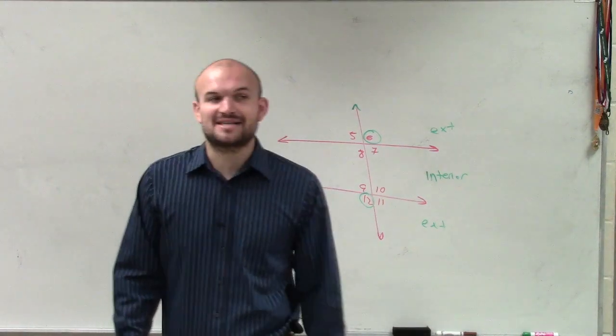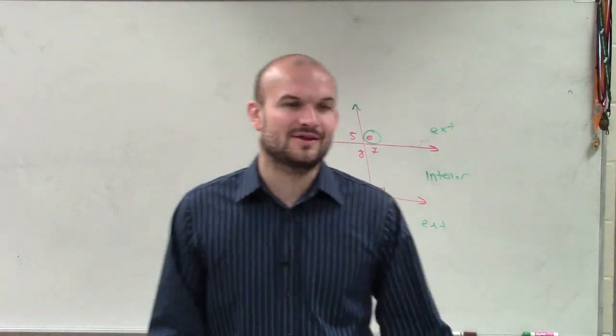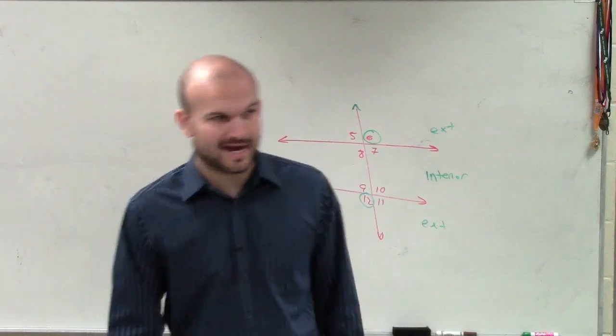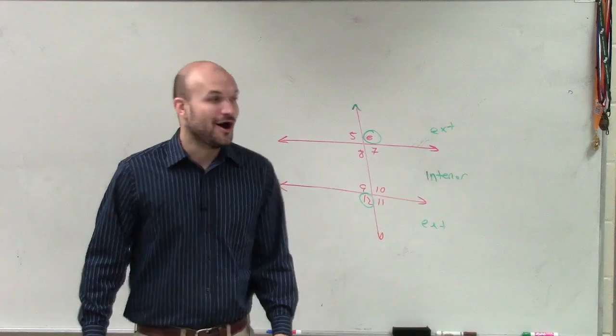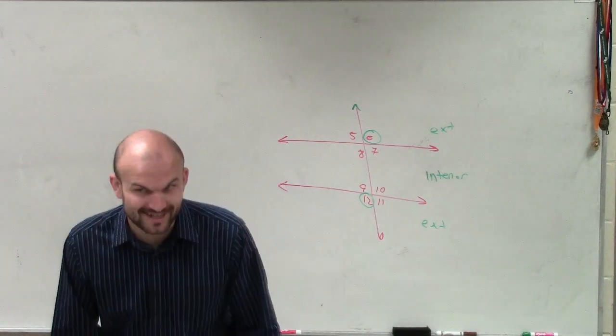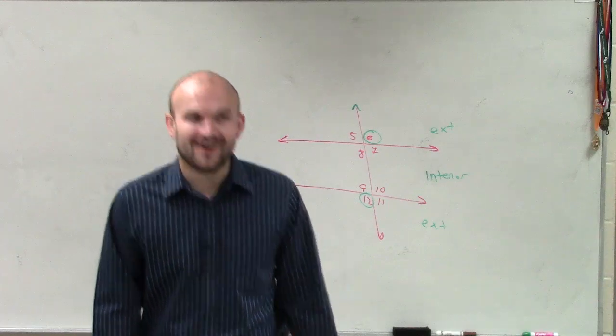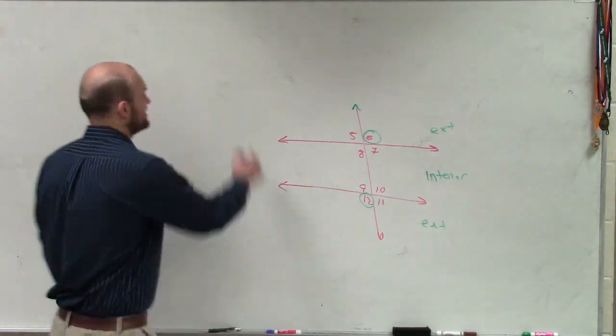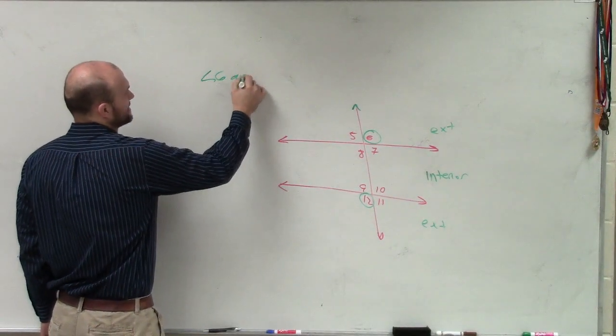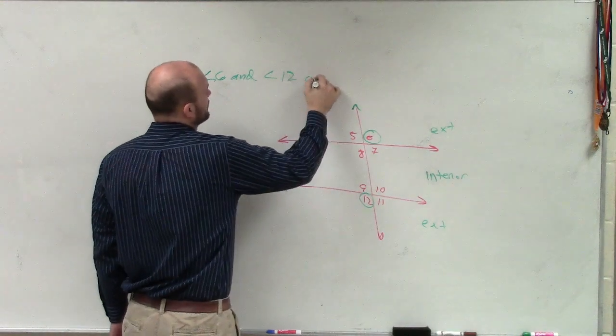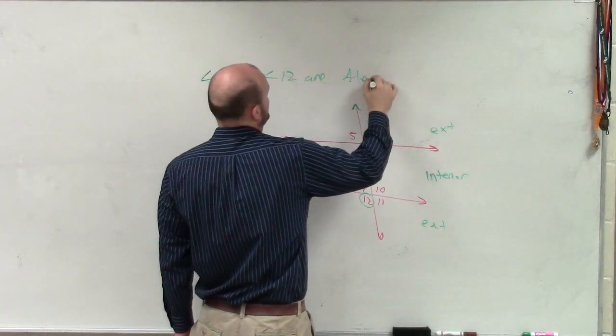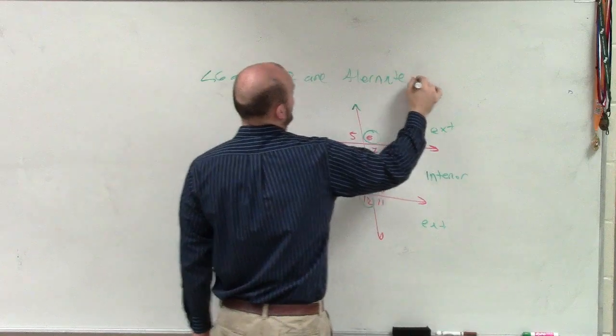Then are they on the same side of the transversal or are they on alternating sides of the transversal? Alternate. So since they're alternating and they're exterior, we can call them alternate exterior angles. So you could say angle 6 and angle 12 are alternate exterior.